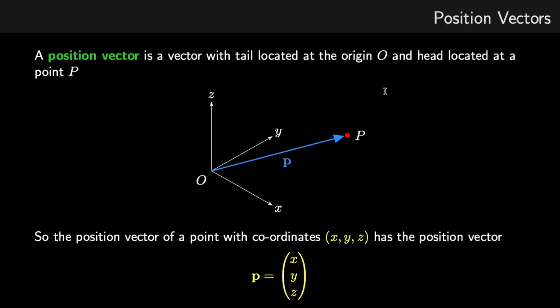Now a special type of vector is a position vector, and a position vector has its tail at the origin of our space and its head at some point P. And this is known as a position vector because the vector P is similar to the coordinate. So a point with coordinates x, y, and z has a position vector with the values x, y, and z.